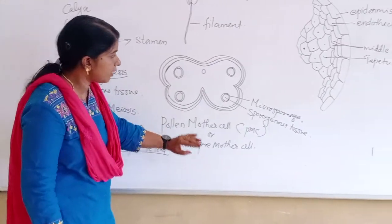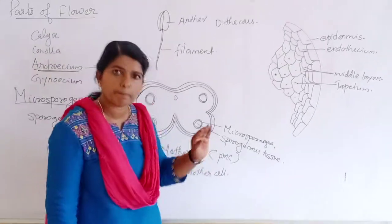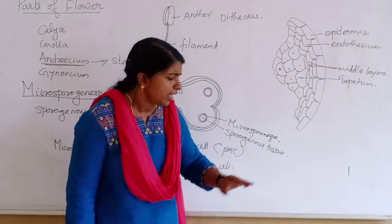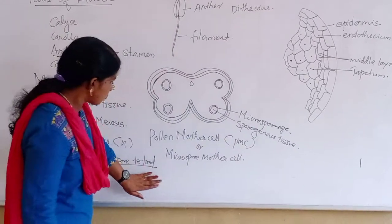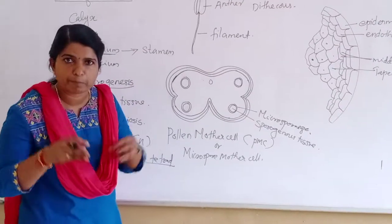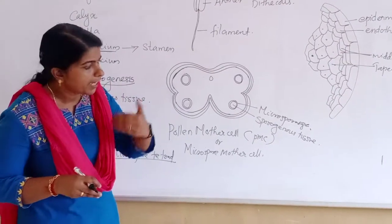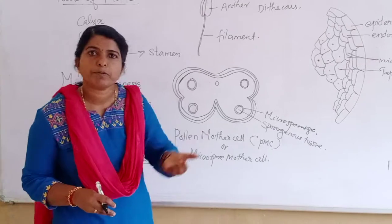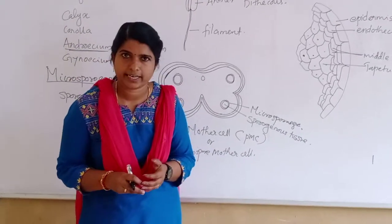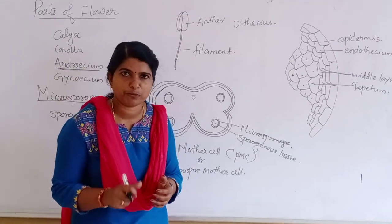When the anther matures and gets dehydrated, the microspore tetrad will dissociate from each other, and each one develops into an individual pollen grain.